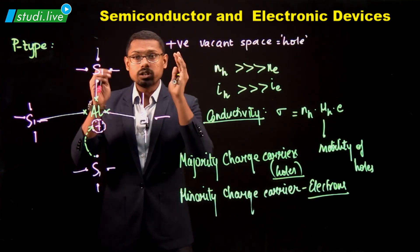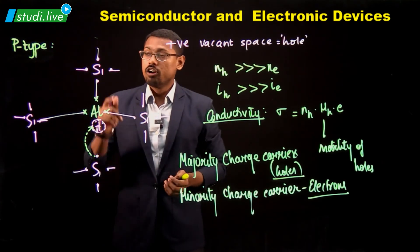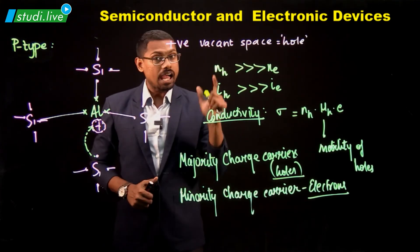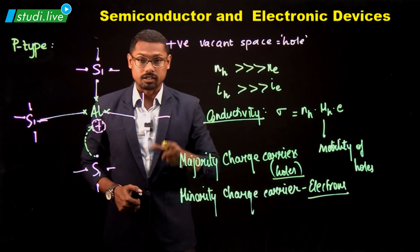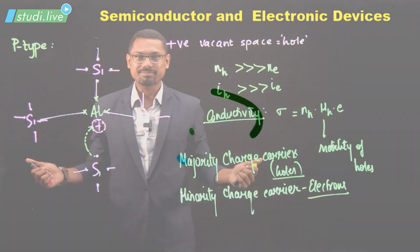That is the energy bands for a P-type semiconductor and an N-type semiconductor. Until then, stay tuned with Study Life and keep learning with me. Thank you.